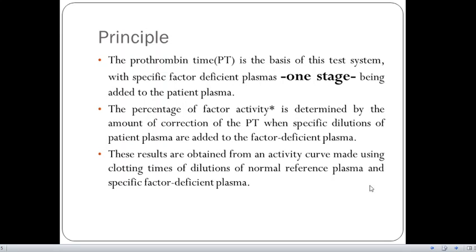The percentage of factor activity is determined by the amount of correction of PT when specific dilutions of the patient plasma are added to the factor deficient plasma.